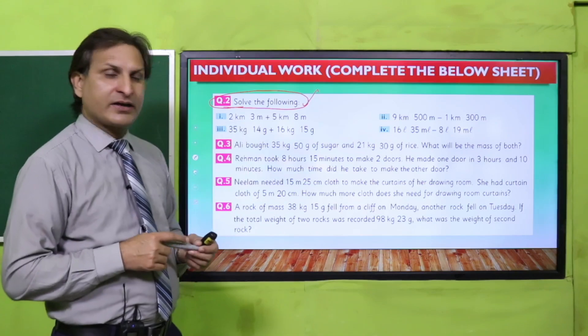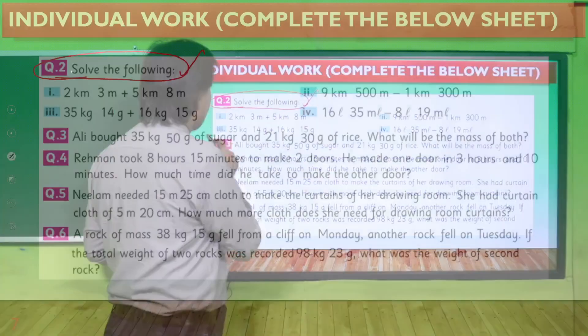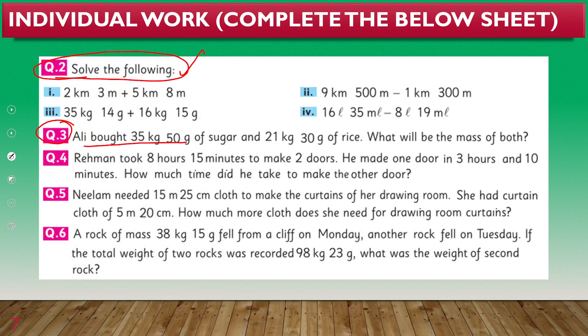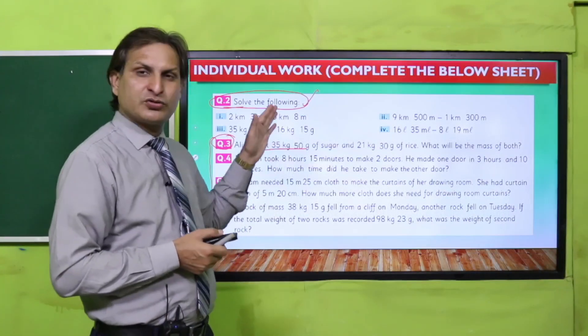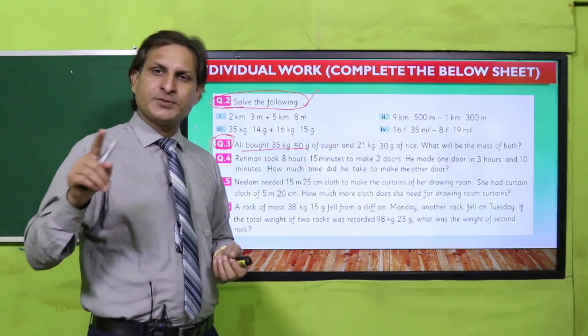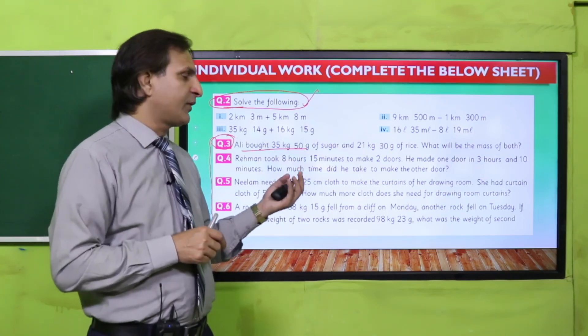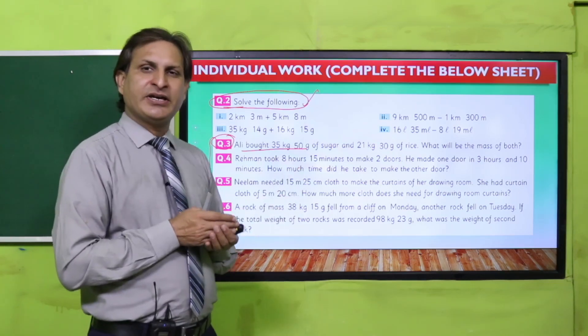Now there is question number 3, and from question number 3 to 5 there are word problems. I have explained the methodology of word problems to you. You have to solve these word problems and tally them with the solution manual given in the description box, and then submit this exercise solution to your teacher in your notebook.